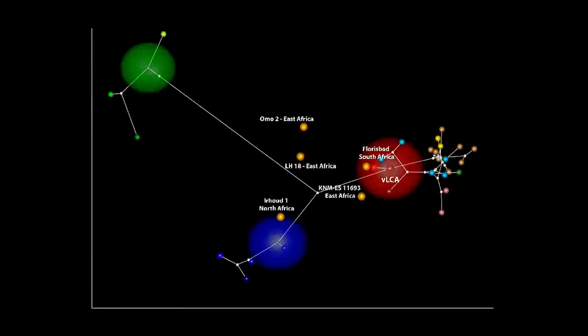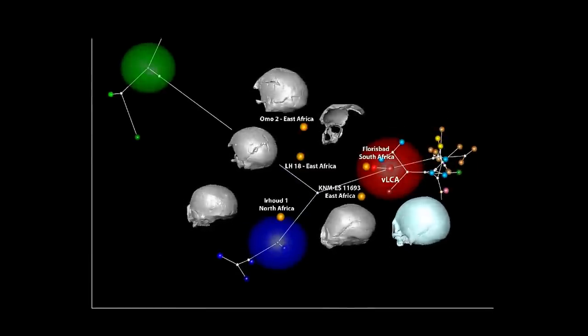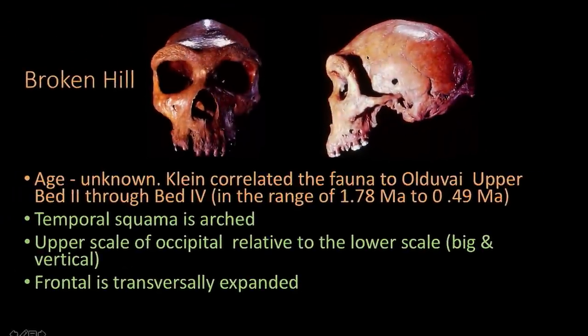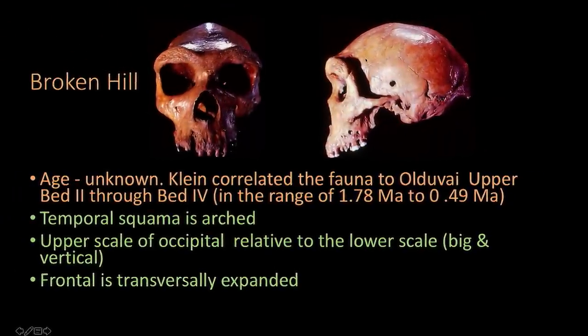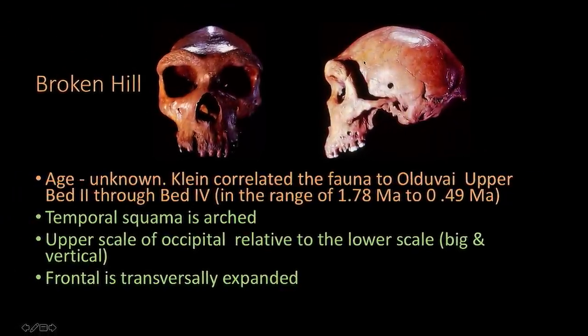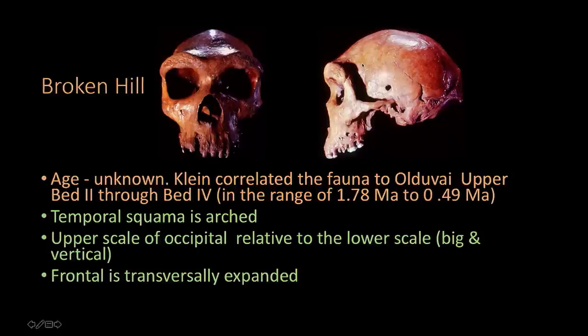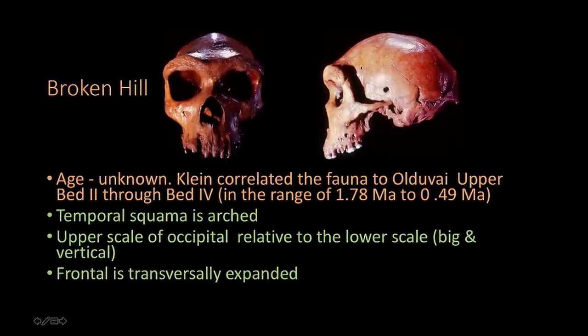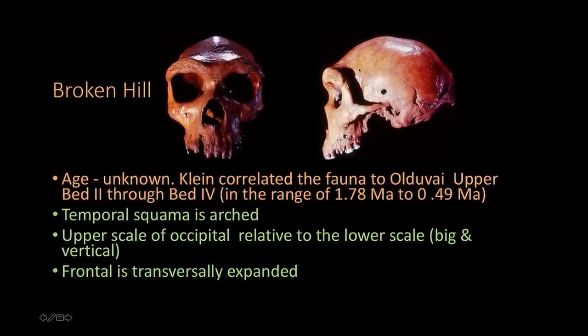Then a team of geneticists sequenced 147 mitochondrial genomes from living people around the world. The mitochondria in cells are inherited from mothers only, and the study indicated that everyone was descended from a single woman, known as mitochondrial Eve,